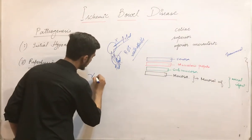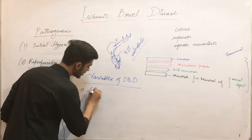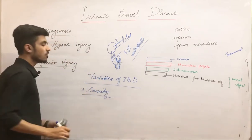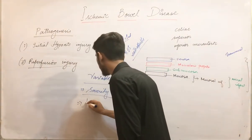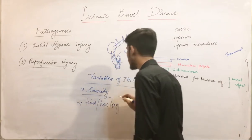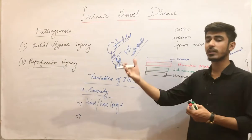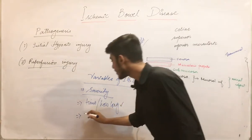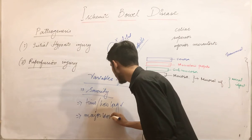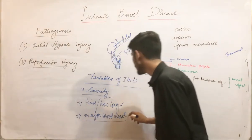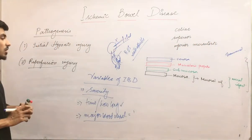The variables of ischemic bowel disease are: first, the severity of the vascular compromise; second, the duration — how long the blood supply has been compromised, since a longer time means more damage; and third, whether a major blood vessel is involved, as involvement of a major vessel will result in more severe damage.